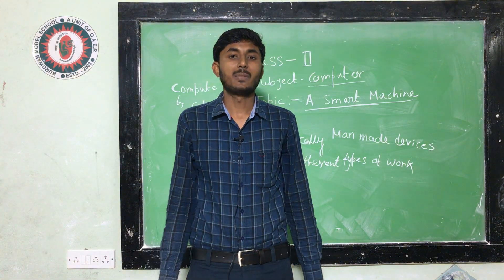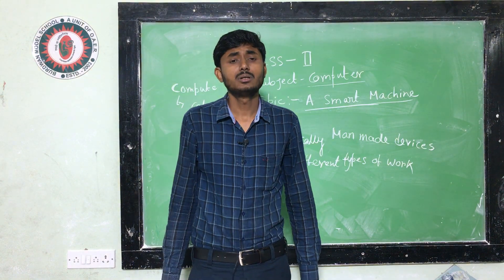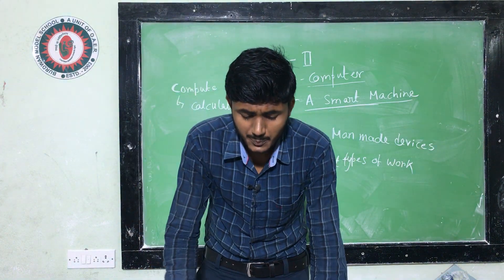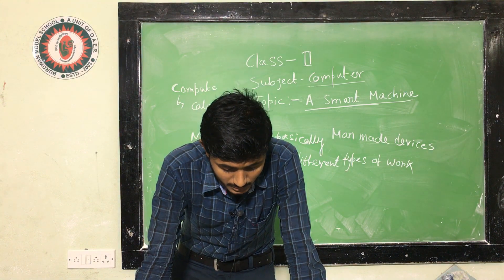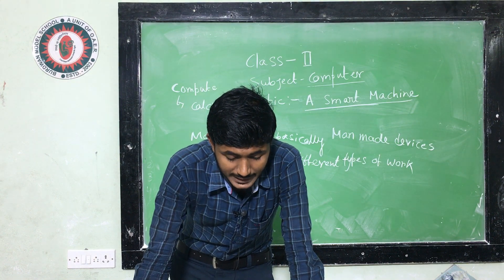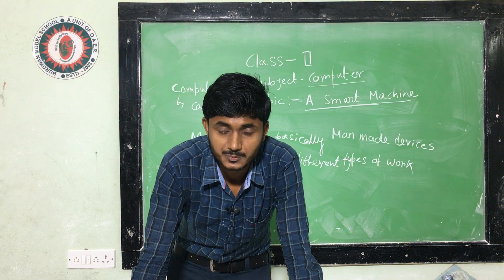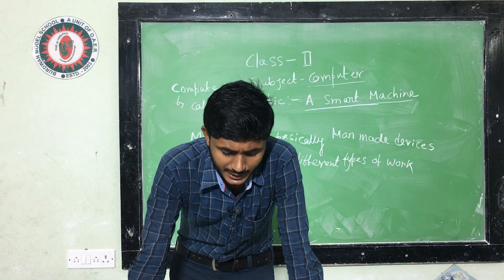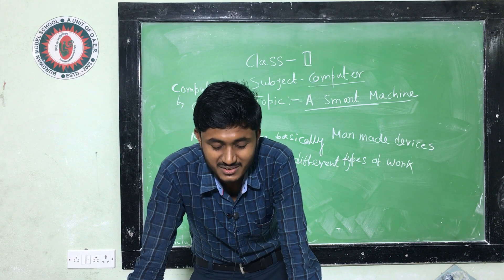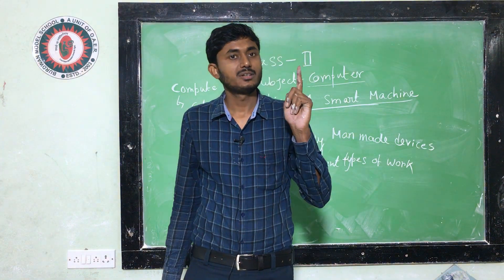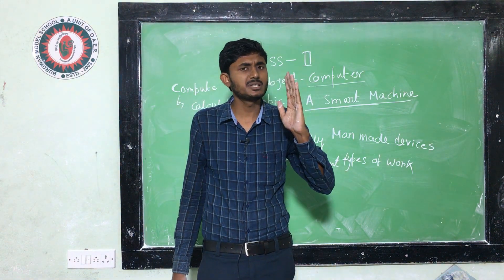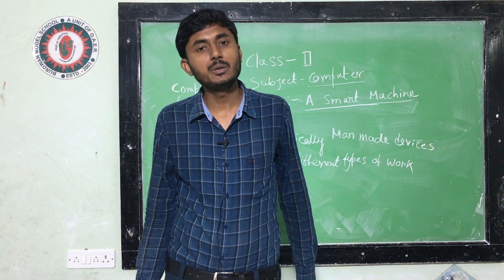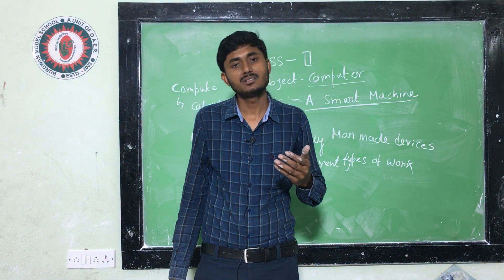A computer is also called multi-tasking. Now, what are the tasks performed by a smart machine or a computer? The first comparison is time — computer versus human being. A computer takes less time to complete any given task, but a human being mostly takes more time to complete a given task.